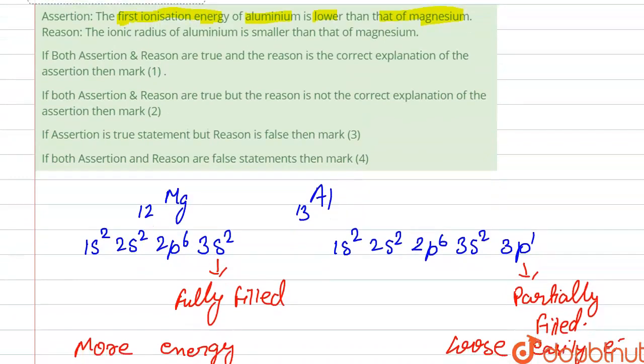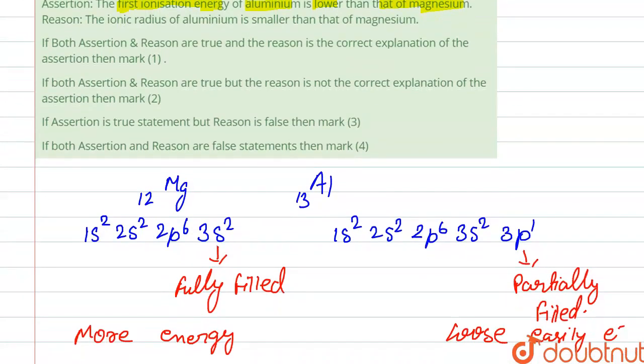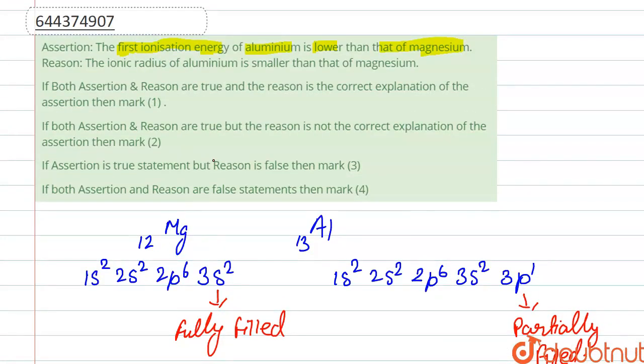So we can say that magnesium has highest, the first ionization energy of aluminium is lower than that of magnesium. So our assertion is correct. Second reason says that the ionic radius of aluminium is smaller than magnesium.